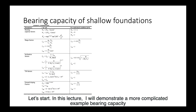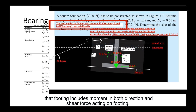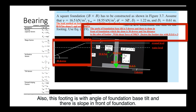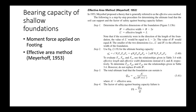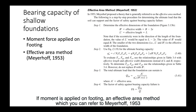In this lecture, I will demonstrate a more complicated example of bearing capacity. The footing includes moment in both directions and shear force acting on the footing. Also, this footing has an angle of foundation base tilt, and there is a slope in front of the foundation. Let me introduce some concepts on how these changes affect the Terzaghi theory equation.